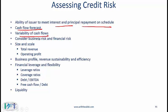Consider the variability of cash flows — if variability is high, then the risk is high. Also consider business risk and financial risk. Look at size and scale: total revenue and operating profit. For large companies with high revenue and stable operating profits, the risk is low.